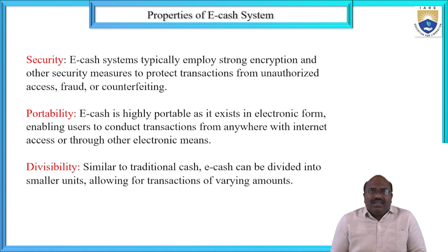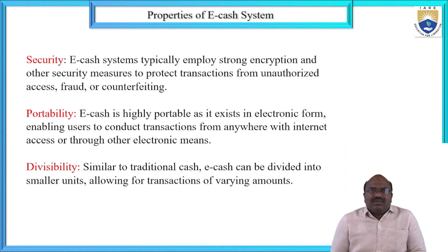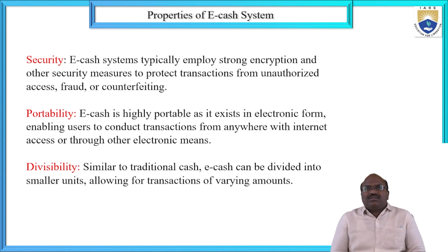Security, portability, and divisibility are also common properties. Security aspects were already discussed. Each system typically employs strong encryption and other security measures to protect against unauthorized access, fraud, or counterfeiting. We can prevent fraud, counterfeiting, and unauthorized access through security measures. Authentication and authorization are also required — only real employees or customers can store, retrieve, and transfer data, and intruders or third parties must not be involved.